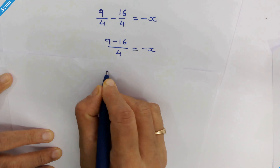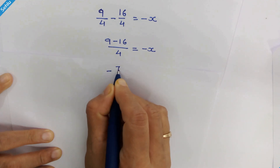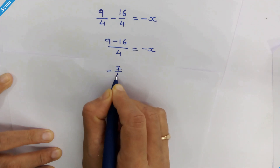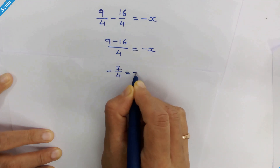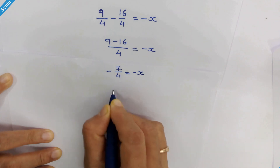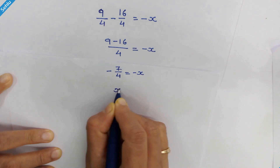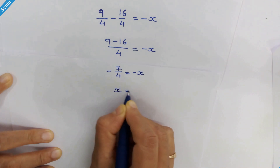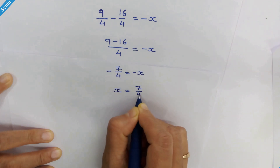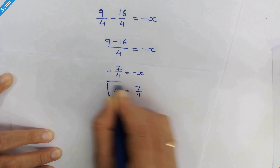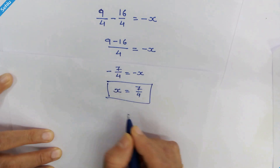So we have minus 7 upon 4 is equal to minus x, therefore x is equal to 7 upon 4. That's the answer.